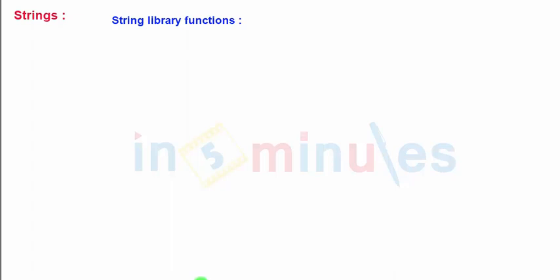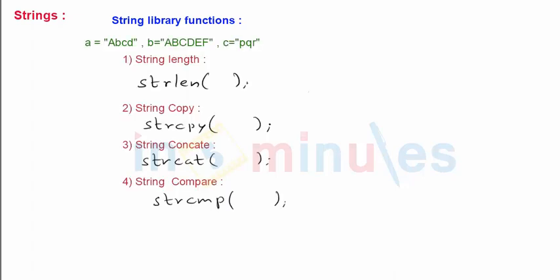This will make some programs easy to write which are related to strings. Now there are some 15 to 17 different functions that do different kinds of tasks. For example, there are functions to compare two strings, function to join one string at the other string, function to find length of a string, function that reverses the string and so on. Now let's see some few functions over here.